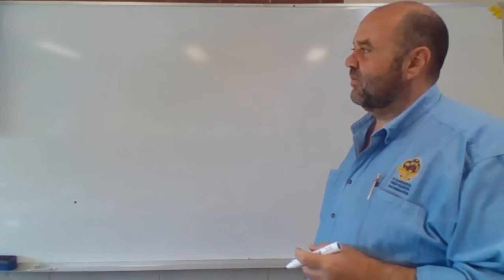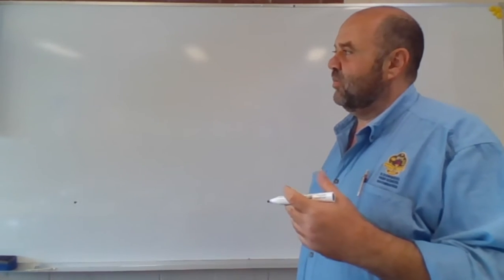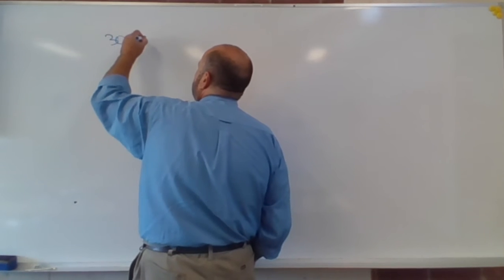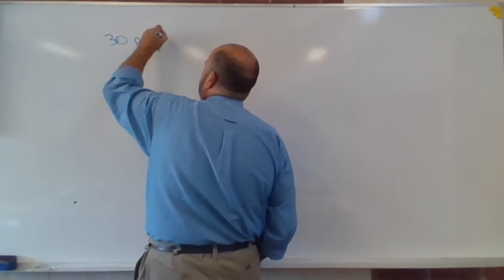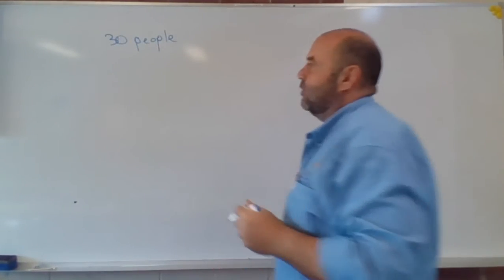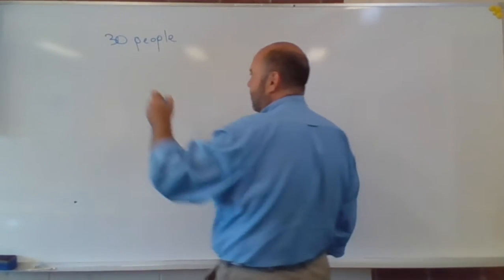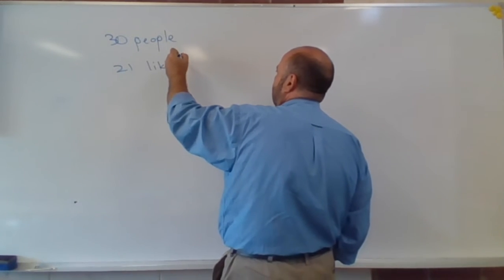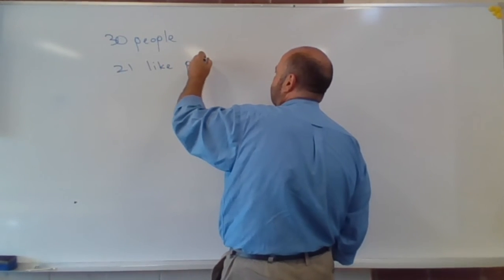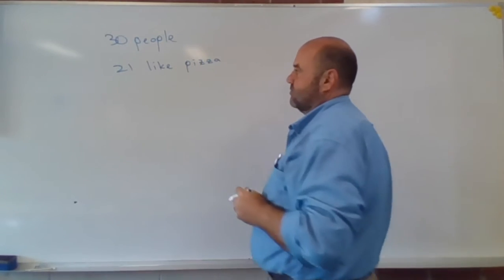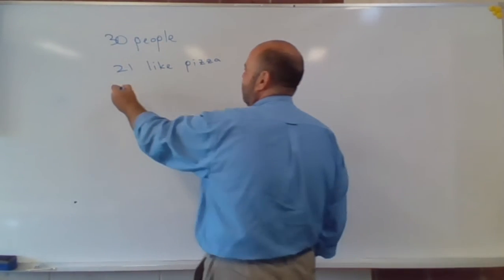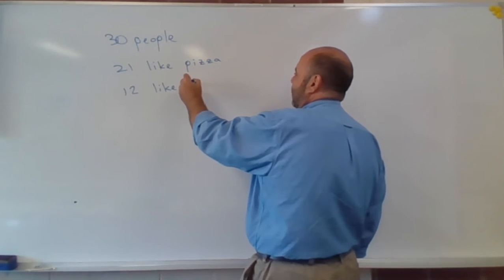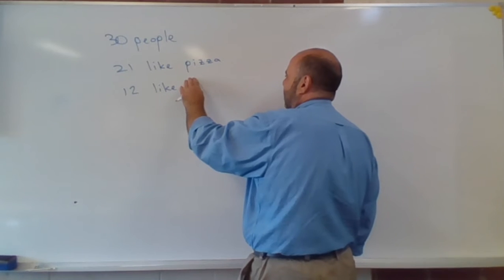So the example I'm going to pick on says that let's say that we survey 30 people, and we find that 21 of them like pizza and 12 like burgers.